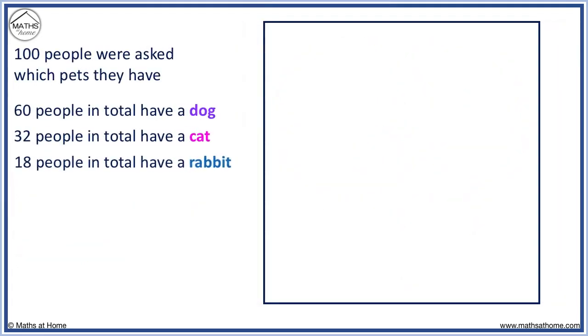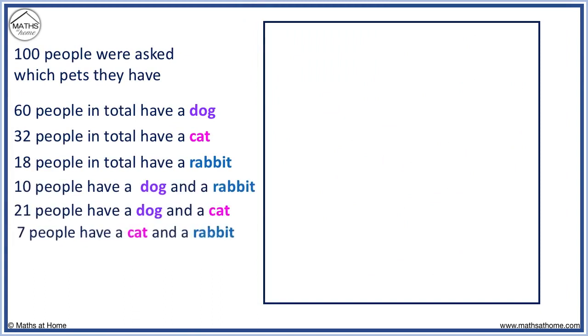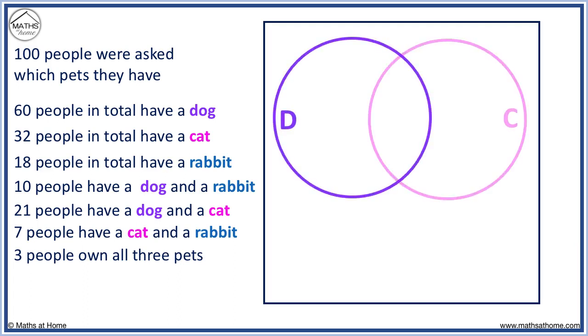Here is a new question which we will draw a Venn diagram for. We have a circle for each pet listed: dogs, cats, and rabbits. We start with the overlap of all 3 circles. 3 people own all 3 pets. This goes in the overlap of the 3 circles.